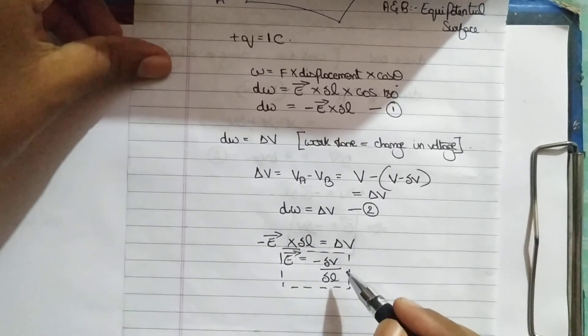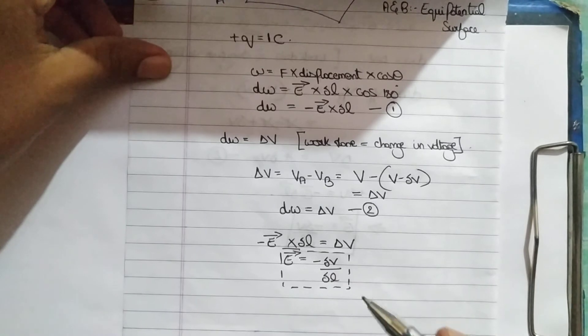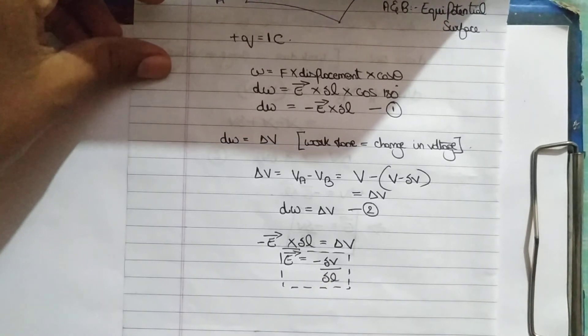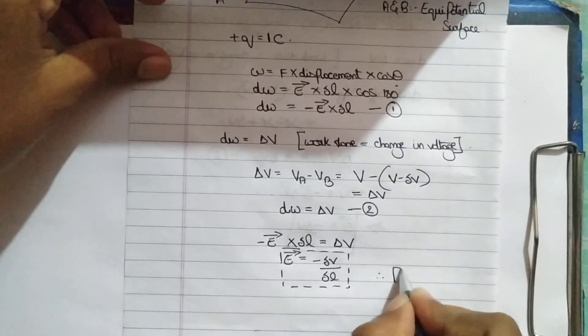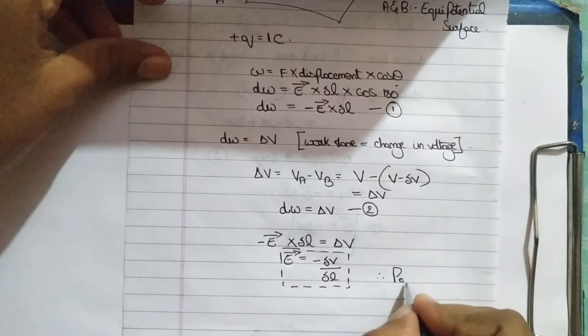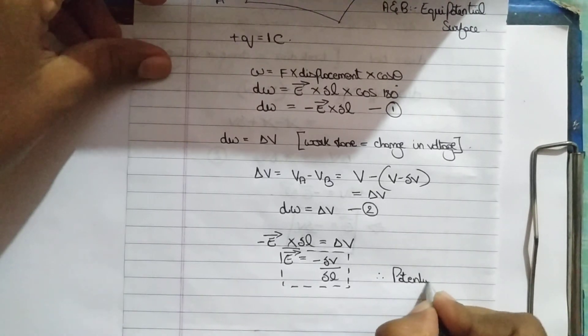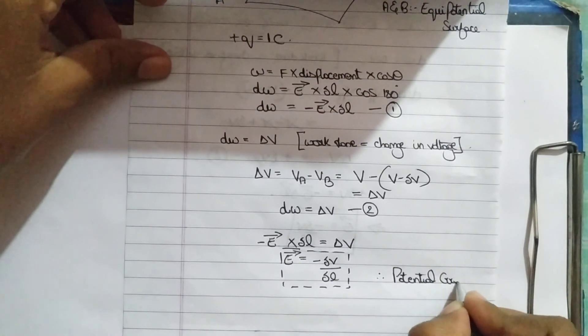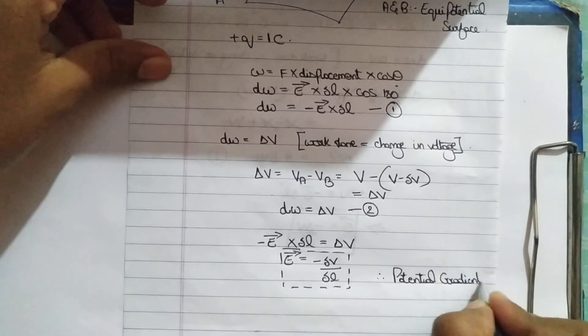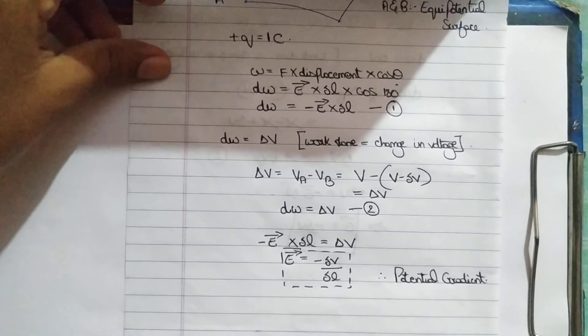The quantity also, remember the quantity that delta V by delta L is the rate of change of potential. Because we have a rate term, the fraction. Rate of change of potential with distance, that is nothing but potential gradient. You can also maybe be asked with this term, potential gradient. Remember all those key terms which may be asked in your papers.